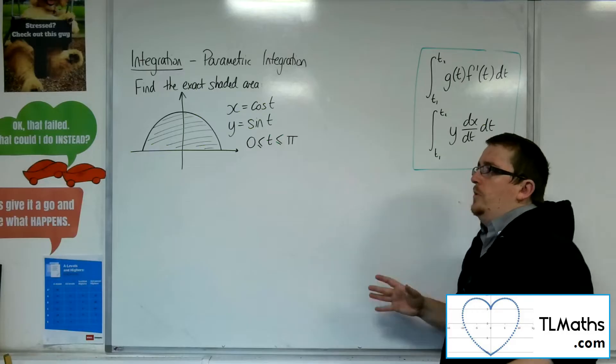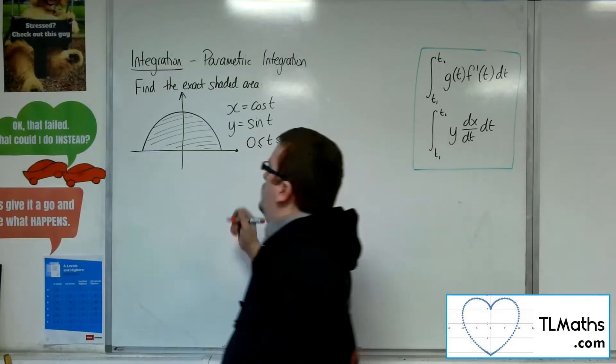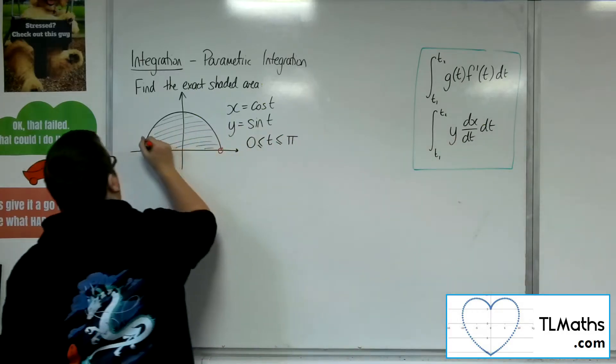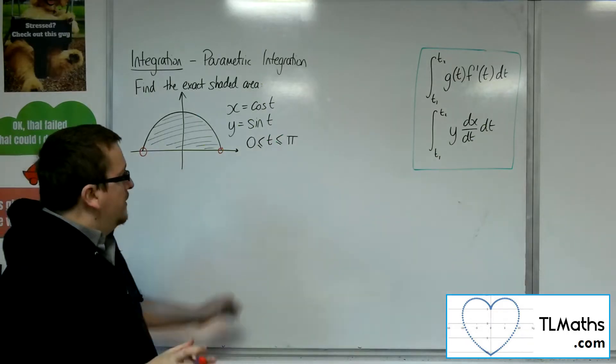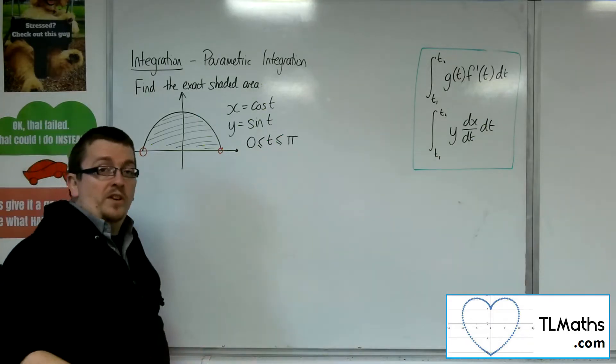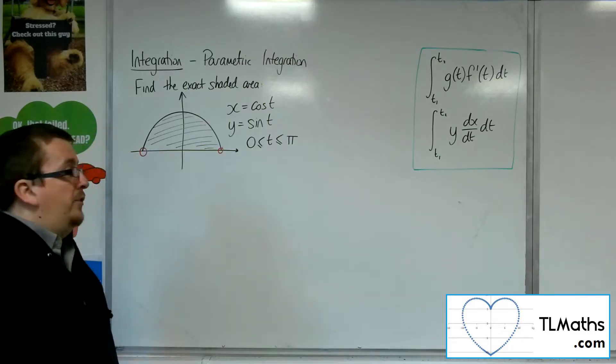So the first thing you really want to do is identify those endpoints of the curve and figure out the t values that go with them. Now you know that the curve's going between 0 and pi, so you just want to determine which one's 0, which one's pi.